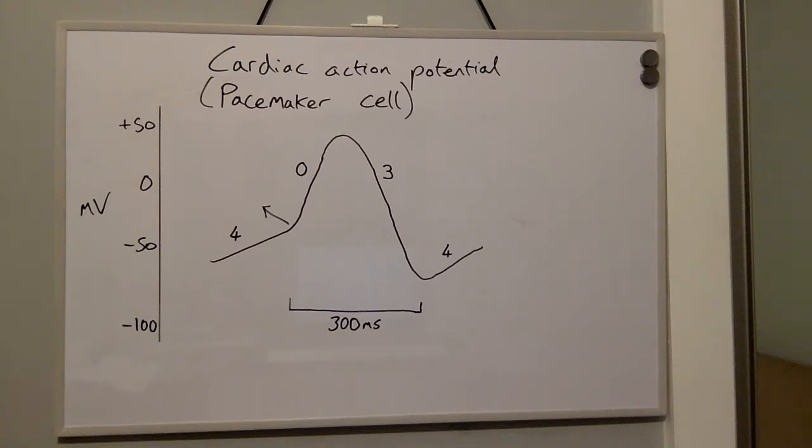Action potentials of cardiac pacemaker myocytes have three phases. Starting with phase four, there is spontaneous depolarization and sodium moves into myocytes via leaky voltage-gated channels that open when the cell membrane potential becomes more negative. This happens immediately after the end of the previous action potential.